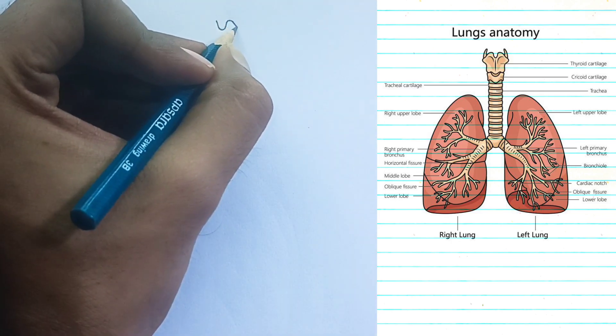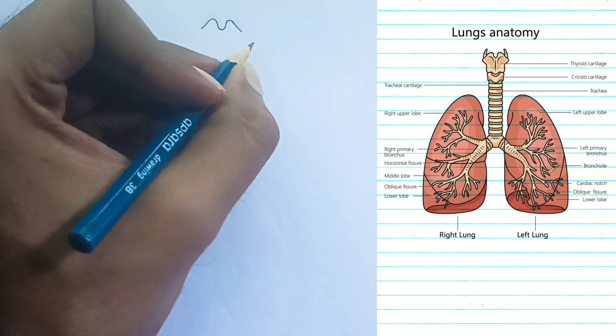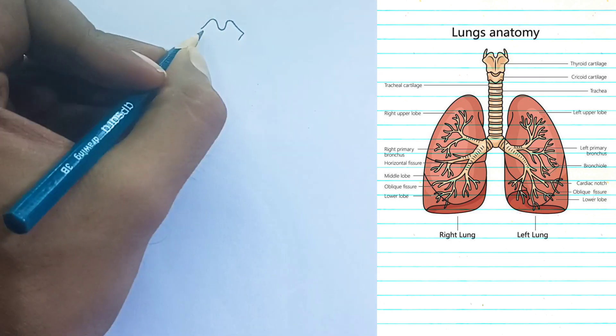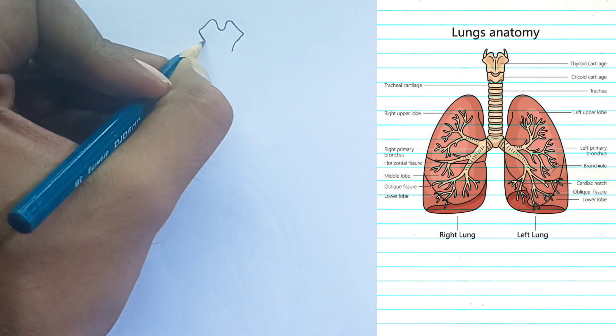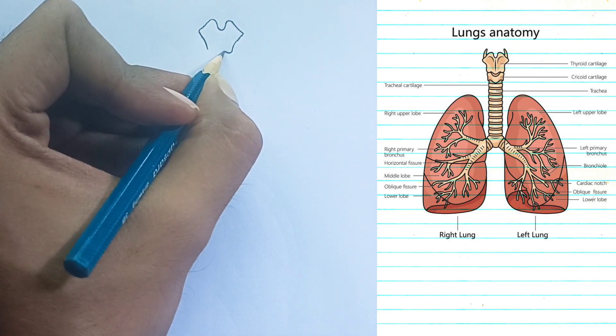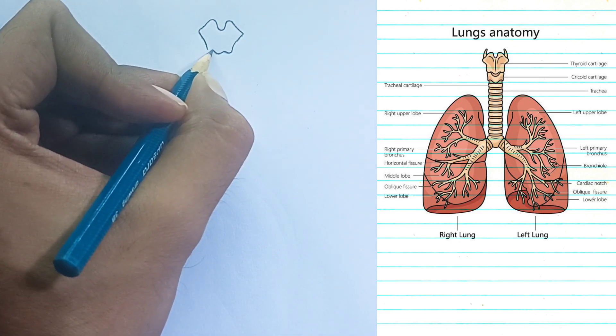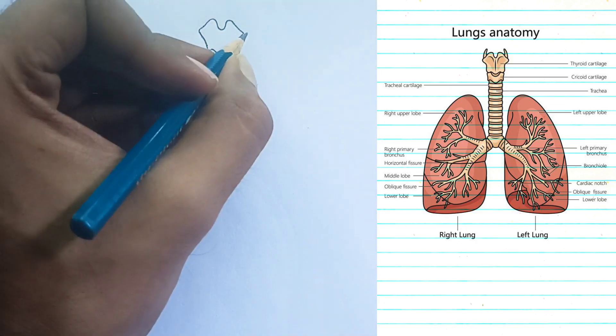Thyroid cartilage: this is the largest cartilage of the larynx, forming the Adam's apple. Cricoid cartilage: a ring-shaped cartilage forming the inferior part of the larynx, just below the thyroid cartilage.